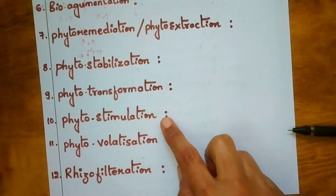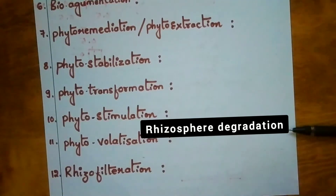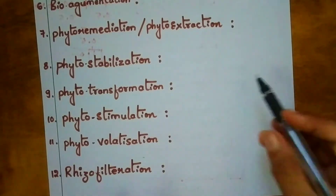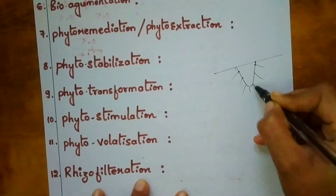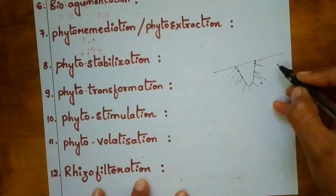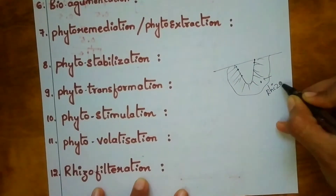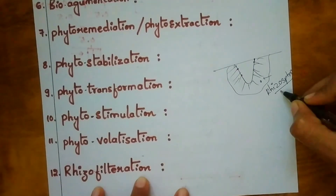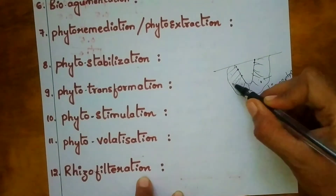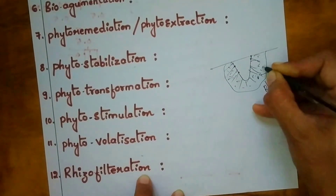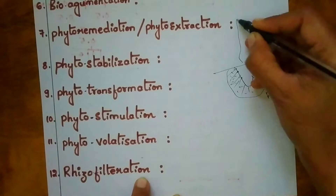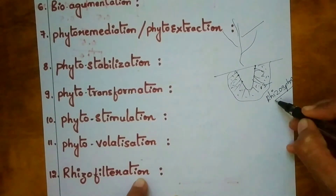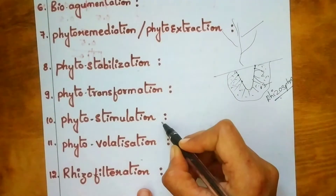Phytostimulation means stimulating the microorganisms of the rhizosphere to undertake bioremediation by growing the plant. It is also called rhizosphere degradation. The rhizosphere is the zone around the root, and stimulating the microorganisms in this zone to carry out bioremediation is called phytostimulation or rhizosphere degradation.